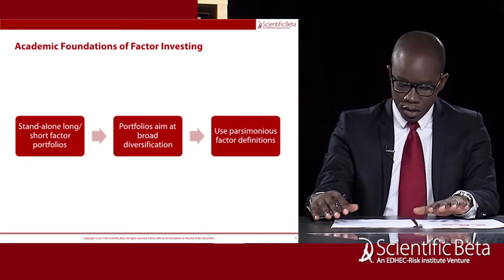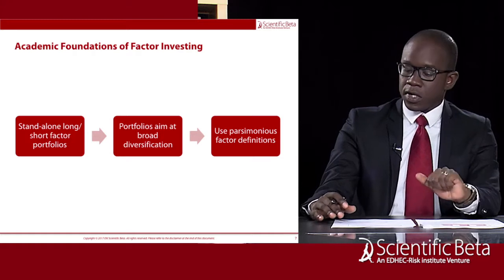Thanks, Eric. To summarise, you made four points: firstly, the academic literature says stock-level estimates are not reliable; secondly, single-factor relations break down at the multi-factor level; thirdly, mean-variance optimisation approaches tend to lead to error maximisation and concentration; and finally, the academic literature on factor investing is based on creating single-factor portfolios in a top-down manner.